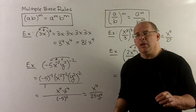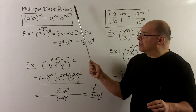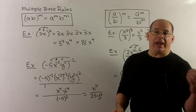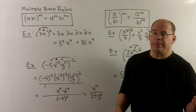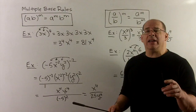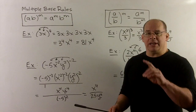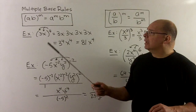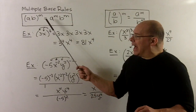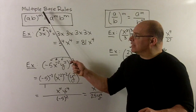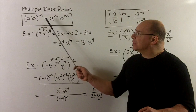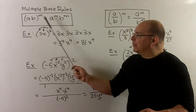Now we come to what I call multiple base rules. The idea here is we have some expression in parentheses raised to a single exponent. The general idea is that everything that shows up on the inside gets that power of the exponent. For the multiplication case: a times b raised to the mth power is a to the m times b to the m. So the a picks up the m and the b picks up the m.